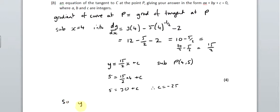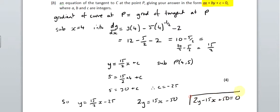So y equals 15 over 2 x minus 25. That's our equation of the line, but it's not in the form they've asked for. They want it in that form. And if they've asked for it, that means it's a mark. So I'm going to multiply through by 2. That gives me 2y equals 15x minus 50. Now I'm going to subtract it all across. So 2y minus 15x plus 50 equals 0. And that's in the form they've asked for.